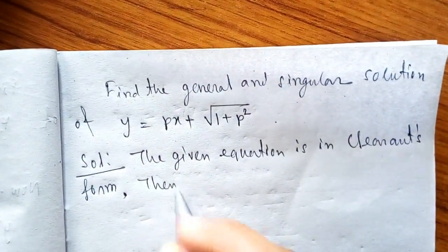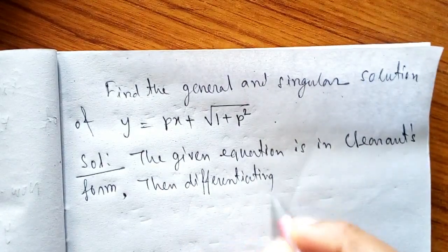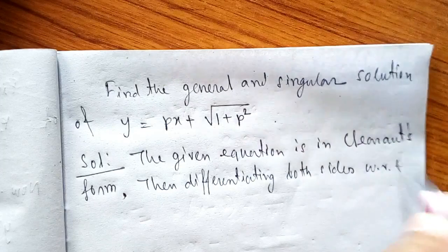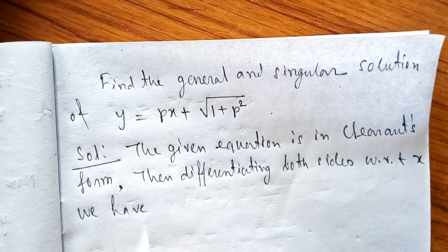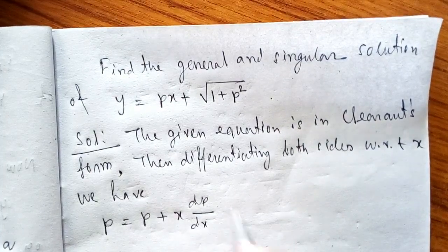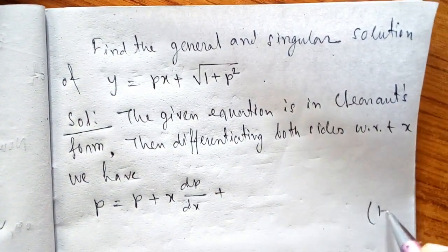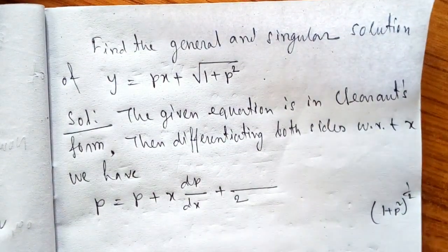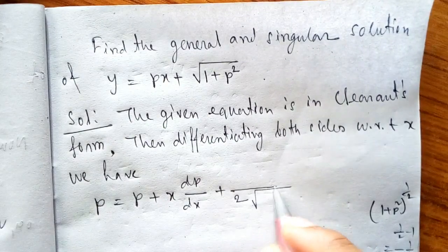Differentiating both sides with respect to x, we have p = p + x·(dp/dx) + differentiation of √(1 + p²), which is [1 / (2√(1 + p²))] · 2p · (dp/dx).